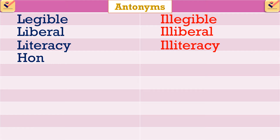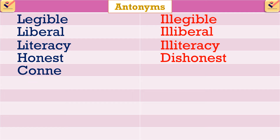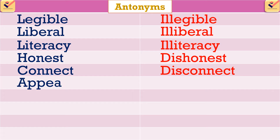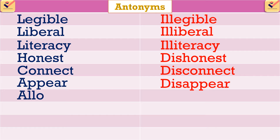Antonyms using the prefix 'dis': honest – dishonest, connect – disconnect, appear – disappear, allow – disallow.